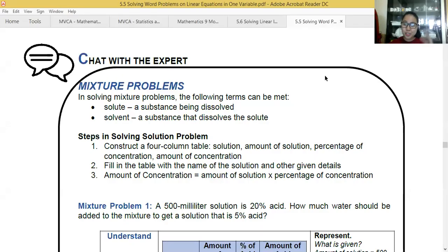In the mixture problem, as I told you, there are two kinds. We have the solute and the solvent. If you say solute, it is the one being dissolved. If you say solvent, it is the substance that dissolves the solute.